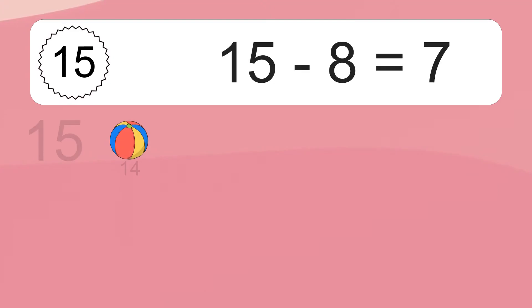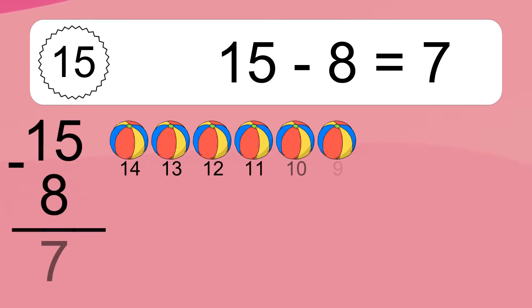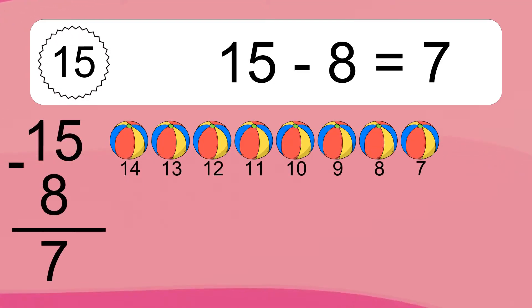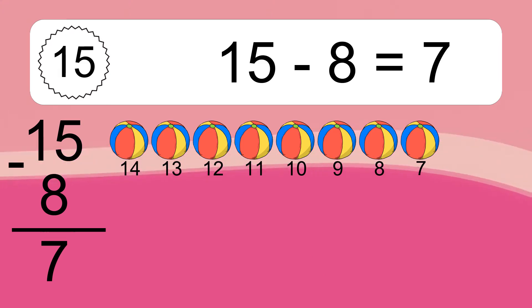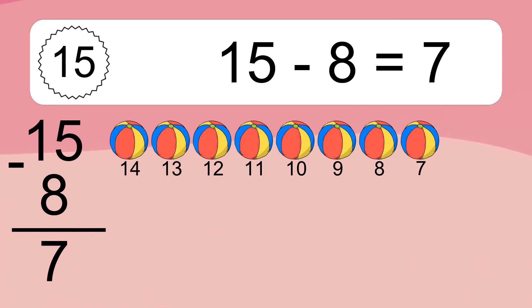15 minus 8 equals what? 15 minus 8 equals 7. Let's count it. 14, 13, 12, 11, 10, 9, 8, 7.